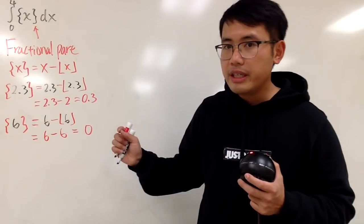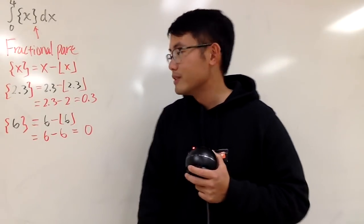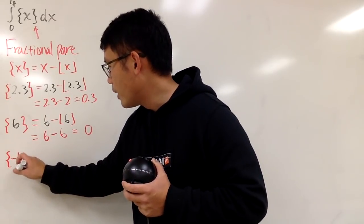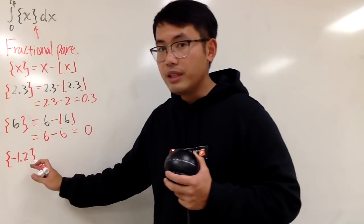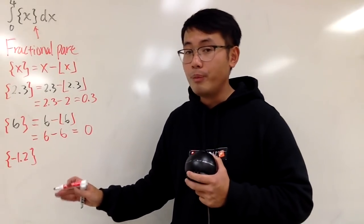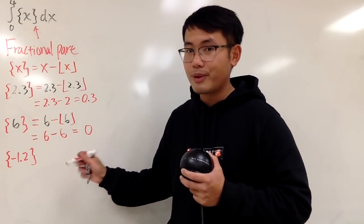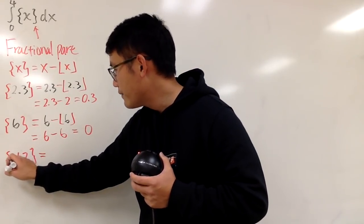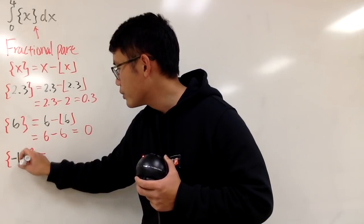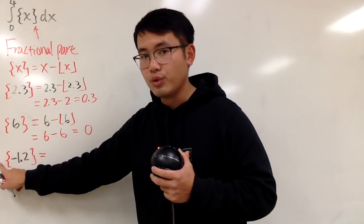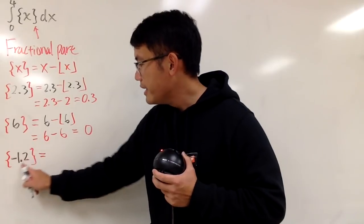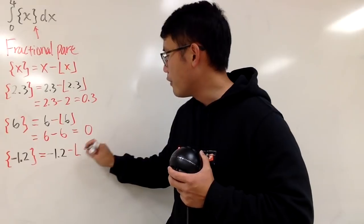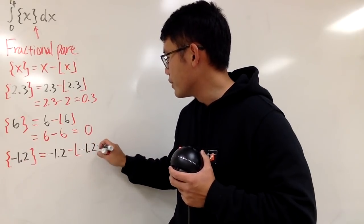This is tricky when you have negative number, so let's see. If we have the fractional part of negative 1.2, the answer to this is not 0.2, nor negative 0.2, right? You have to do it carefully. Well, follow the definition. Note that we have a negative 1.2 in here. Do not take out the negative to the front. You have to put negative 1.2 into this x. And then minus the floor of negative 1.2, like that.